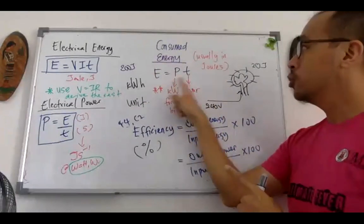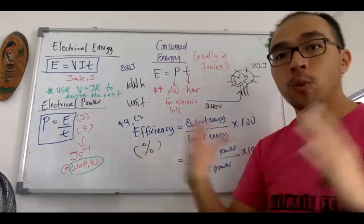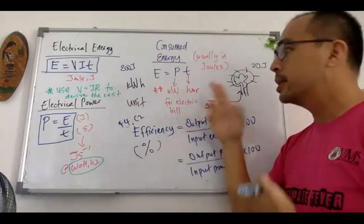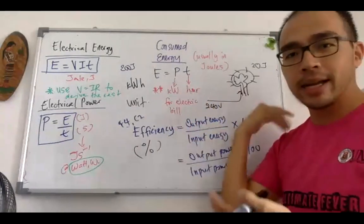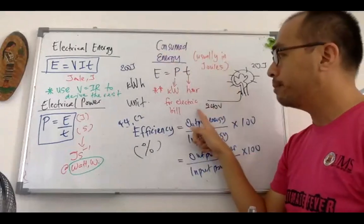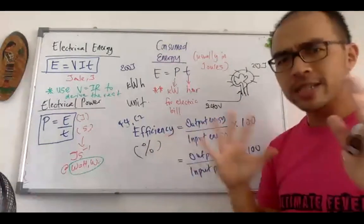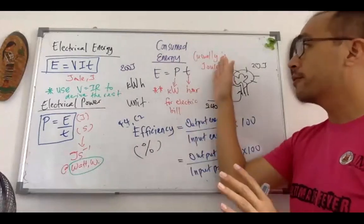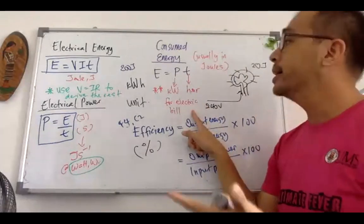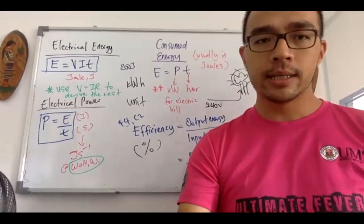For electricity bills, the electrician reads the meter monthly in hours, not seconds — counting per second would give impractically large numbers. So we use the formula E = P × t but with power in kilowatts and time in hours to get kilowatt-hours. To summarize: consumed energy is normally in joules, but for electricity bills we always use kilowatt-hours.